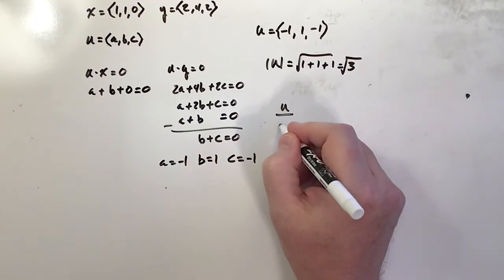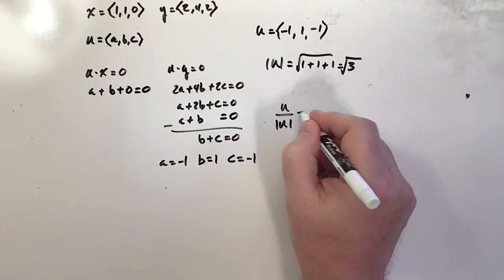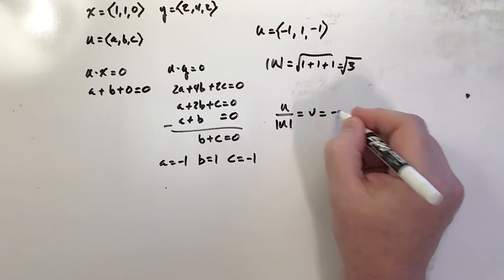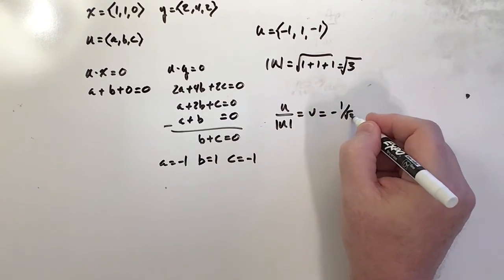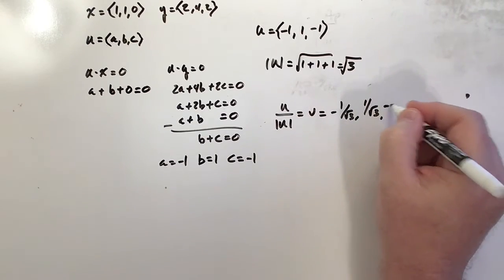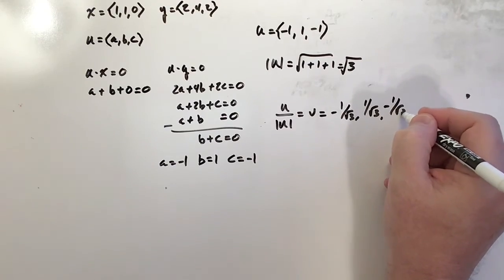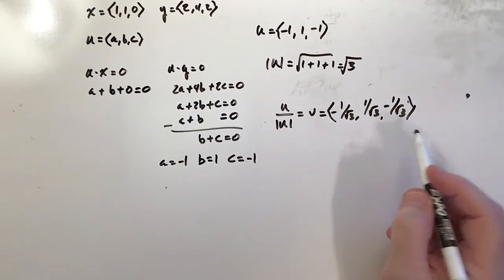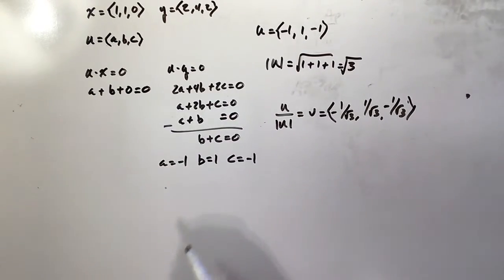So if I divide u by the magnitude of u, I'll have u divided by the magnitude of u, and that will be our unit vector, which I can call v. And that will be negative 1 over radical 3, second component is 1 over radical 3, and third component again is negative 1 over radical 3. And that will be a vector that is perpendicular to both and has a magnitude of 1.